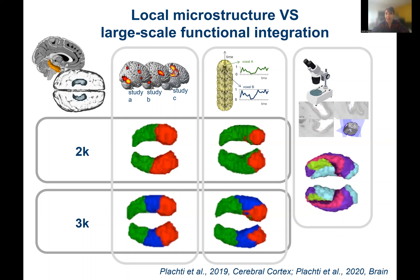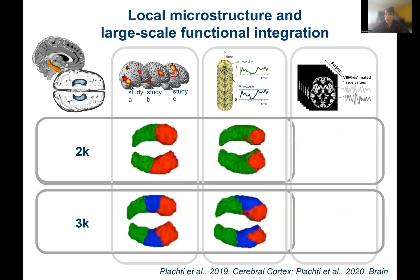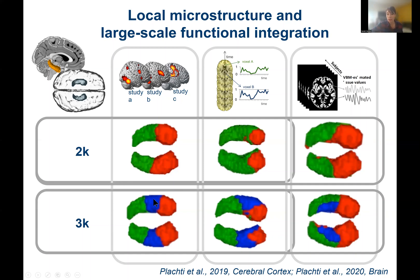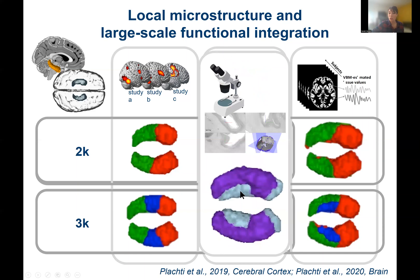Using structural covariance — which probes functional integration but is also assumed to be influenced by similarity in local microstructure profiles — we first see a differentiation along the anterior-posterior axis. But at three clusters we also see a medial-lateral differentiation, which differs from purely functional connectivity approaches. This medial-lateral differentiation actually resembles the medial-lateral differentiation seen based on cytoarchitecture — specifically the differentiation between the subiculum and the CA fields.